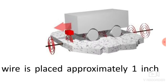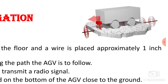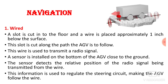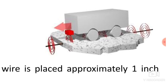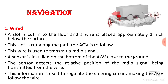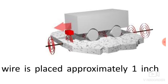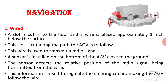Here you can see the schematic for wired navigation. A slot is cut into the floor and wire is placed approximately one inch below the surface, along the path the AGV is to follow. This wire is used to transmit a radio signal. A sensor is installed at the bottom of the AGV close to the ground. The sensor detects the relative position of the radio signal being transmitted from the wire.